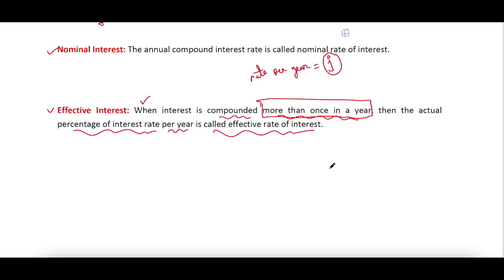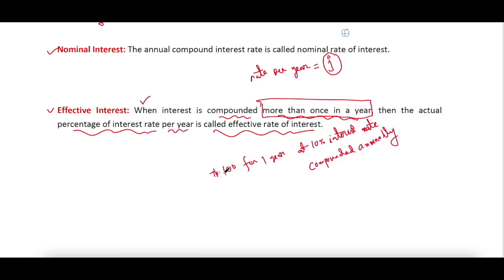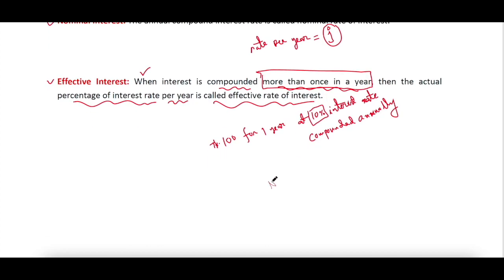Let's say if you invest 100 taka in your bank account for one year at 10% interest rate compounded annually. Then this 10% is the nominal rate. The nominal rate equals 10%, and the effective rate of interest is also 10%. Does it make sense? If you invest 100 taka for one year at 10% interest rate compounded annually, then the nominal rate is 10% and the effective rate is also 10%.